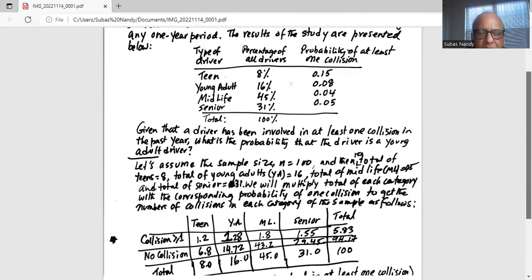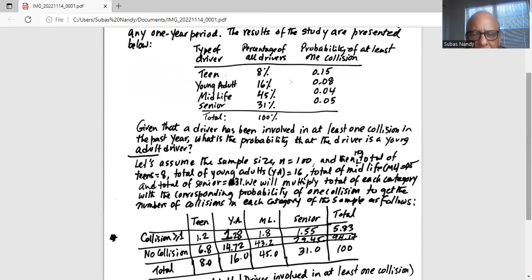So we have four columns: teen, young adults, midlife, and senior. Now, collision greater or equal to 1 is the first row. No collision is the second row.